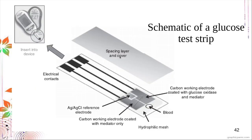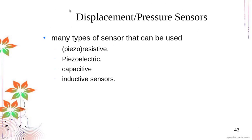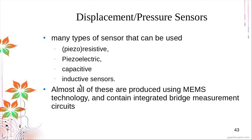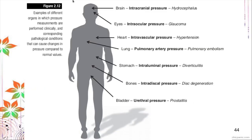The next sensor in this lecture is displacement and pressure sensors. There are several types: piezoresistive, piezoelectric, capacitive, or inductive. Almost all of these pressure sensors are produced using MEMS technology and contain integrated bridge measurement circuits. We need these sensors to measure movements, pressure changes, or displacements in areas of the body.